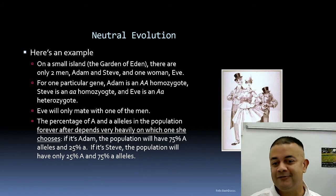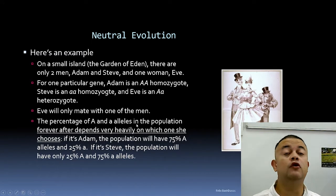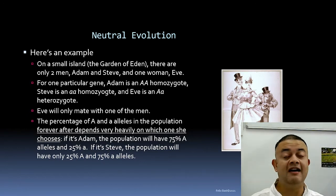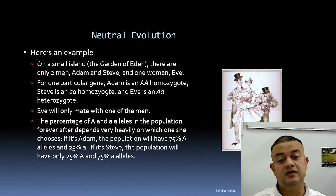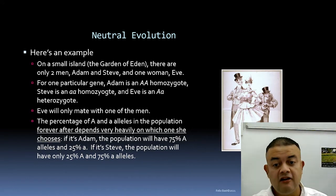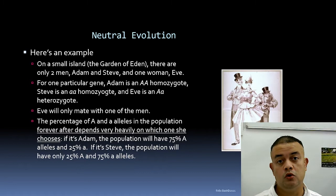If Eve chooses Adam, the population will have 75% dominant allele (A) and 25% recessive allele (a). If she chooses Steve, the population will have 25% dominant A while 75% — the vast majority — will be recessive small a. That choice matters enormously. In nature, this choice is completely random — not affected by adaptation at all.